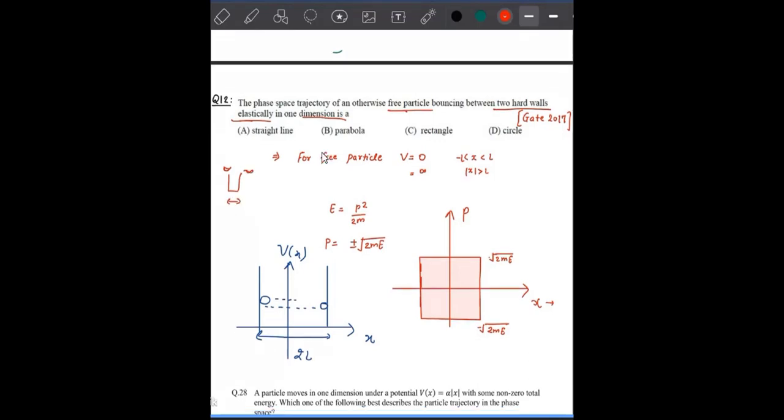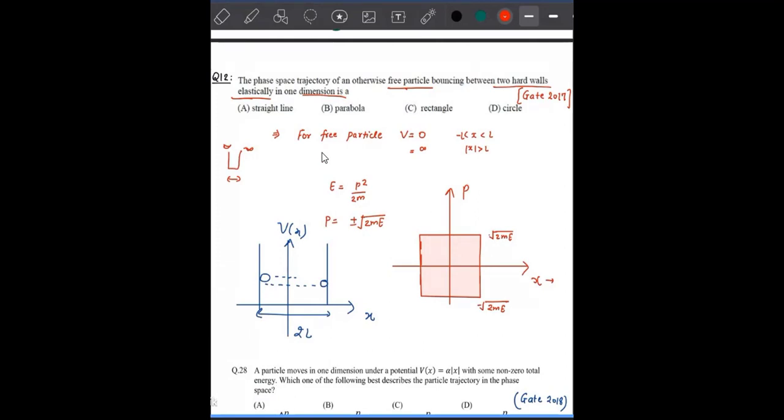From that analogy, we can say that our potential has this form: it has infinity walls, very hard walls as meant here, and particles can elastically move between these two walls.